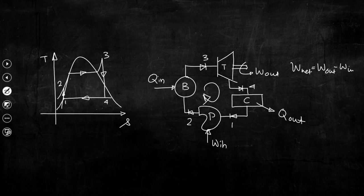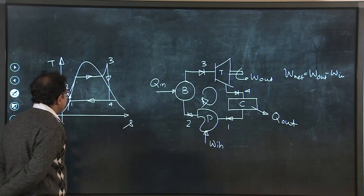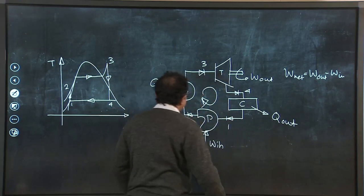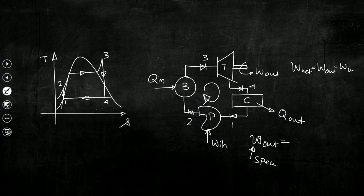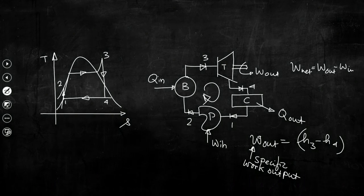Now let us look at another — the most fundamental — objective of having a condenser in a steam power plant. Looking at the T-s plane, the specific work output is W_out = H3 minus H4, which is the enthalpy drop of steam inside the turbine. The pump will handle only liquid, and if the liquid has high temperature there will be problematic issues for the pump, because the blade material will have certain permissible thermal stress bearing capacity.